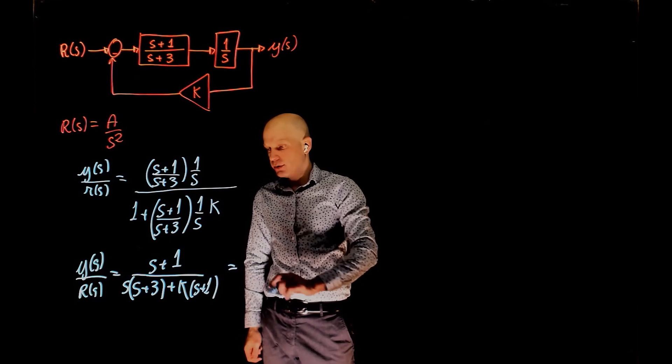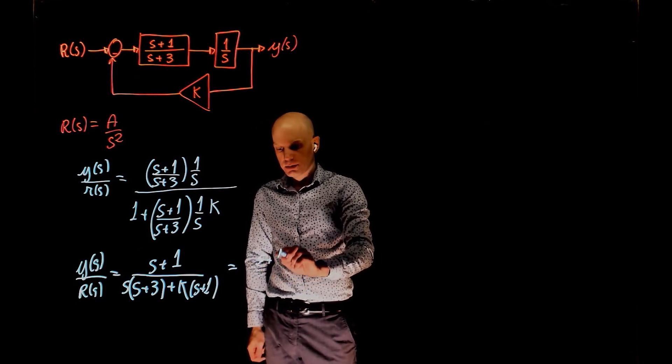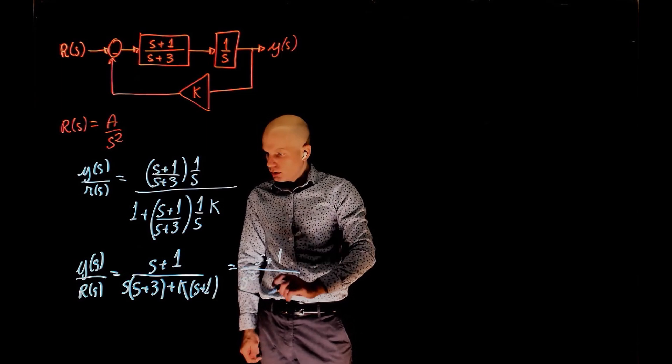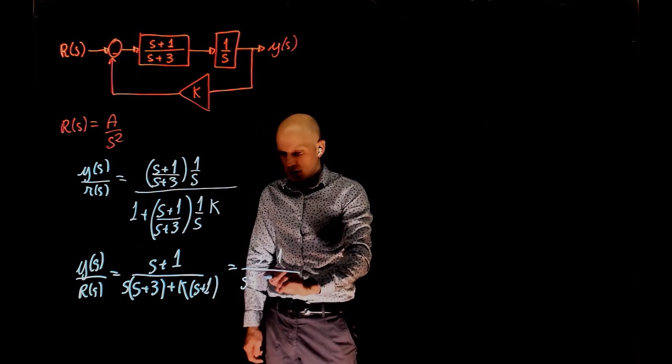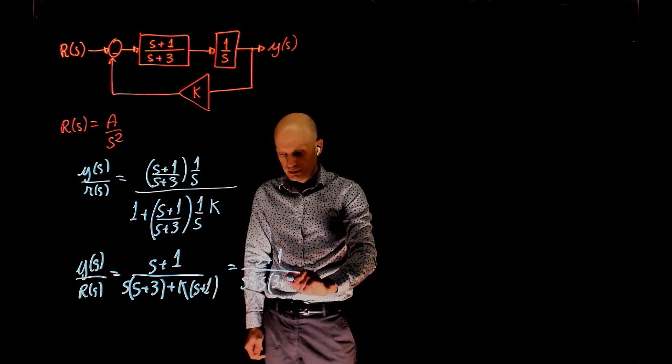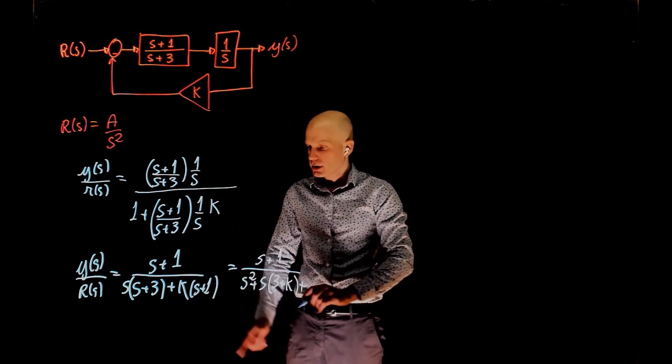And this simplifies to s plus 1 over s squared, plus s times 3 plus k, plus k.